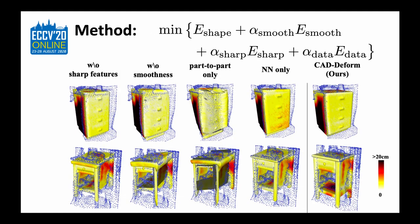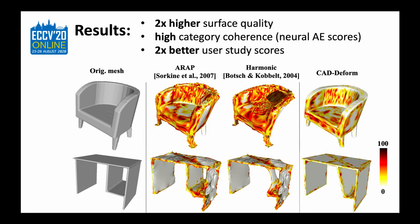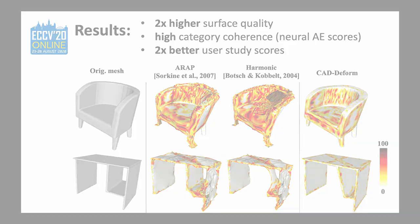Our key contribution is a new deformation formulation aiming to match the scan data as closely as possible, maintain continuity and deformation smoothness, penalize deviation from the original shape, and preserve perceptually important sharp geometric features of the mesh. Our resulting deformations achieve tighter fits, while significantly outperforming the baselines according to multiple criteria for visual quality assessment including a user study.